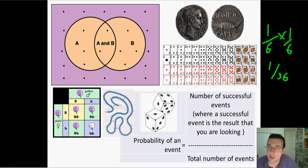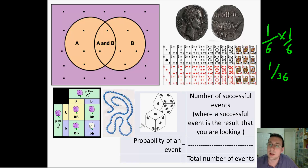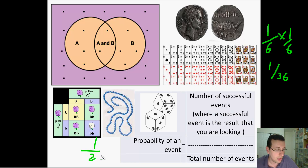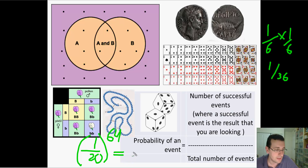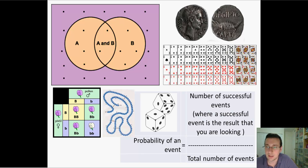Now let's apply this to that protein. If a protein has 20 possible amino acids at each position and has 64 amino acids total, what are the chances of that protein being assembled by chance without any help? For every position, it would be one out of 20. Since you do this 64 times, you raise that to the 64th power — an incredibly small number, approximately zero. This is why DNA is usually involved in the formation of proteins.